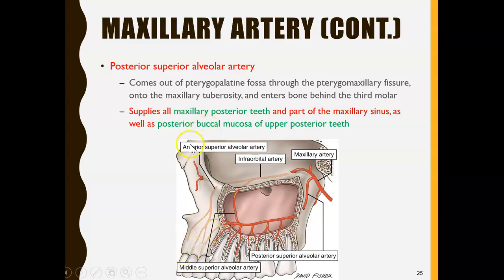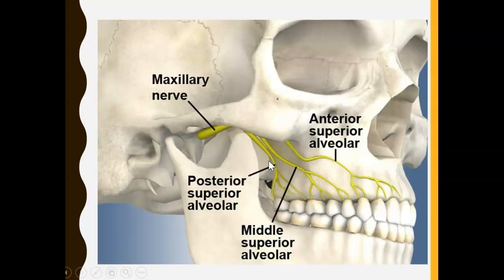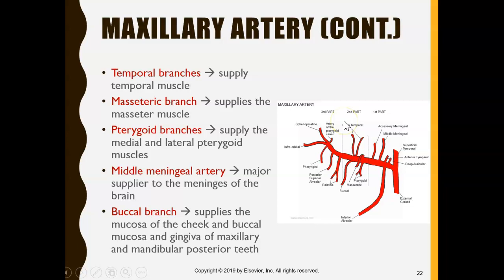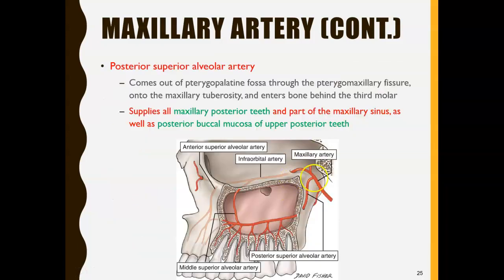There's also the infraorbital artery. 'Infra' means below and 'orbital' refers to the eye, so the infraorbital foramen is a hole below the eye socket. The infraorbital artery comes out from this foramen or canal and supplies the area below the eye near the nose.